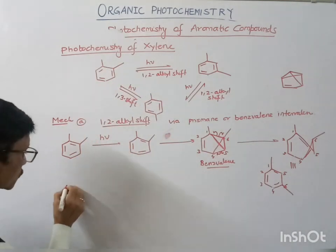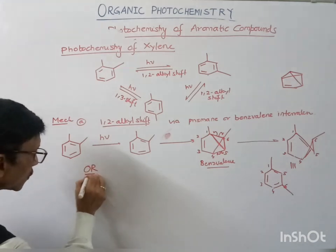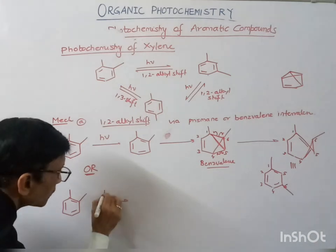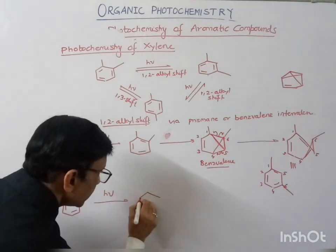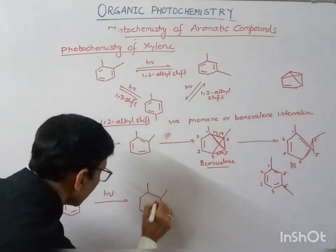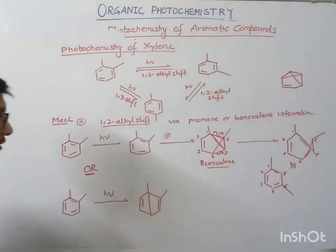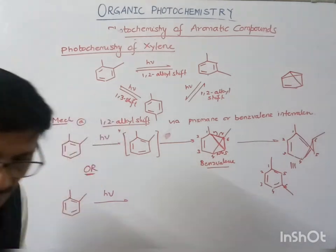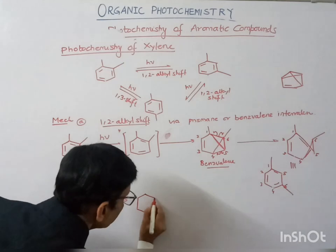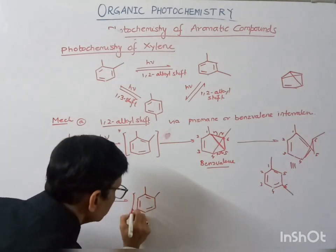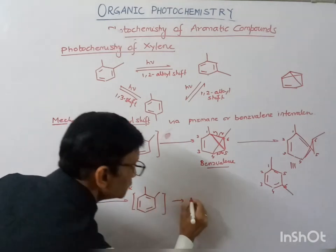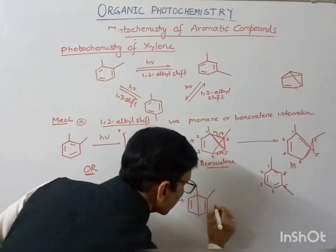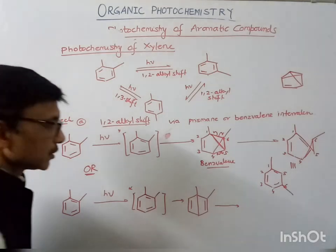This is our benzvalene. We may also show it via the prismane intermediate. The prismane is formed via Dewar benzene, so after excitation we have the excited xylene, and this would be converted to the Dewar benzene.